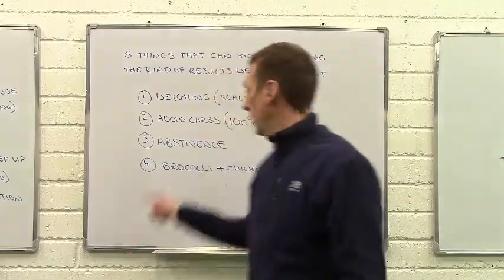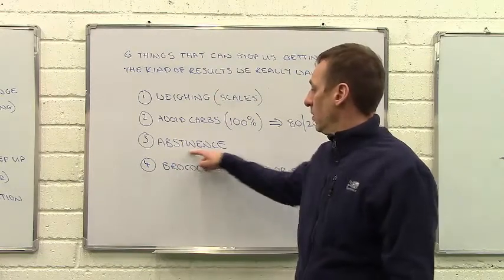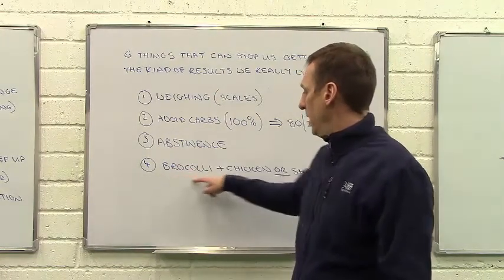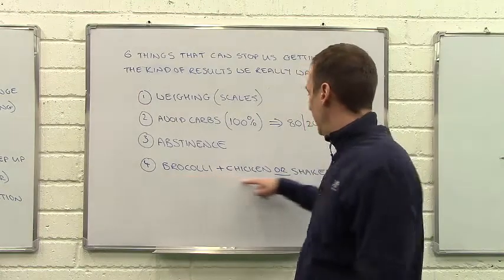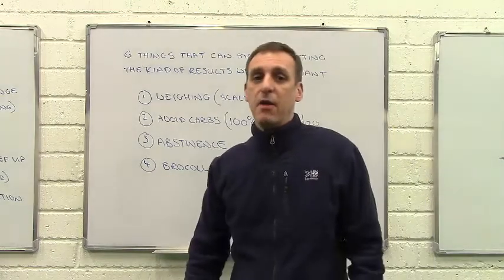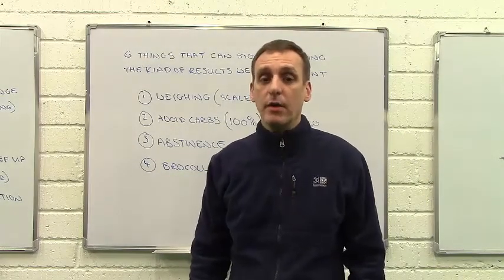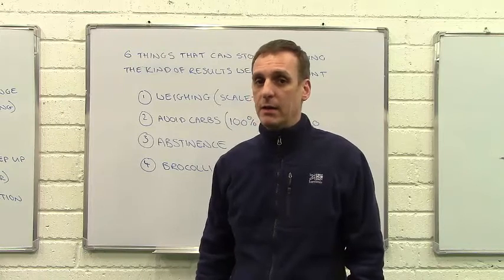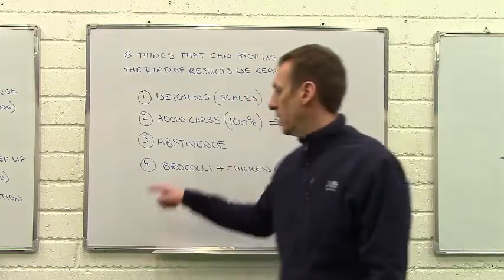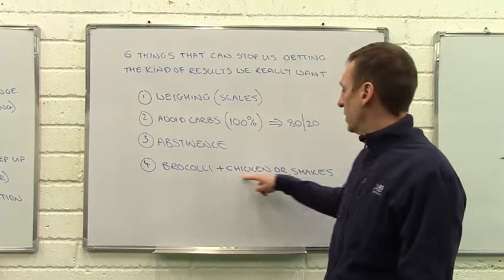Number four, leading nicely on from number three. We talked about cutting all the things you like out. If you're overly eating things that are very healthy, super healthy, and you don't like them, is that really going to give you the results you want in the long term? Are you going to be able to maintain eating stuff you don't like?